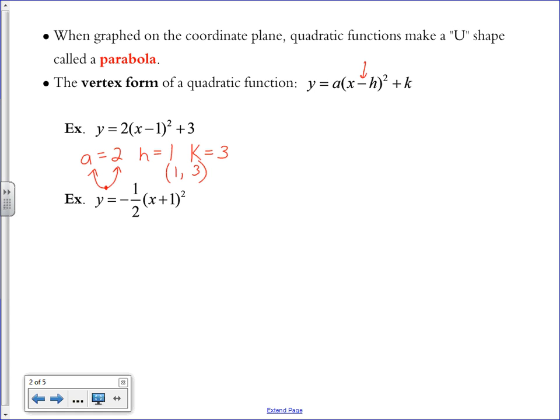So this next example, we have a being negative 1 half, which shows us that our parabola will be concave down, like a frowny face. And our h value is negative 1, it's the opposite of what we see in the parentheses with x. Our k value, because there is none, is 0. So our vertex would be located at negative 1, 0. That would be the first point on our parabola when we're going to graph it.